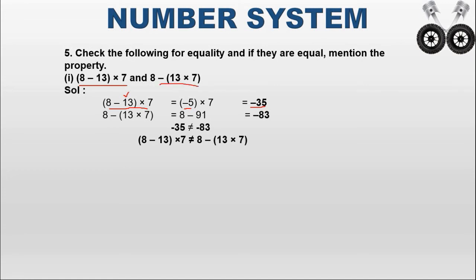For the second expression, 8 × (−13 × 7): inside the bracket, 13 into 7 equals 91 (both positive). Then 8 minus 91: different signs, subtract 91 minus 8 equals 83, and since 91 is bigger and negative, the answer is minus 83. Since minus 35 is not equal to minus 83, the two expressions are not equal.